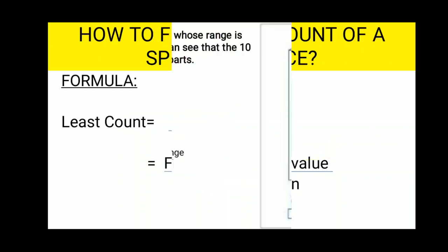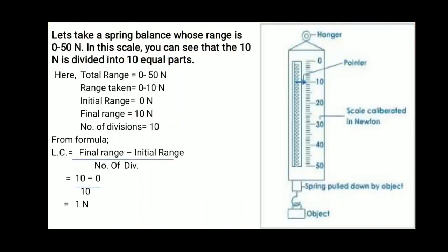For this, let's take a spring balance whose range is 0 to 50 Newton. In this scale, you can see that the 10 Newton is divided into 10 equal parts. As you can see, the total range of this spring balance is 0 to 50.